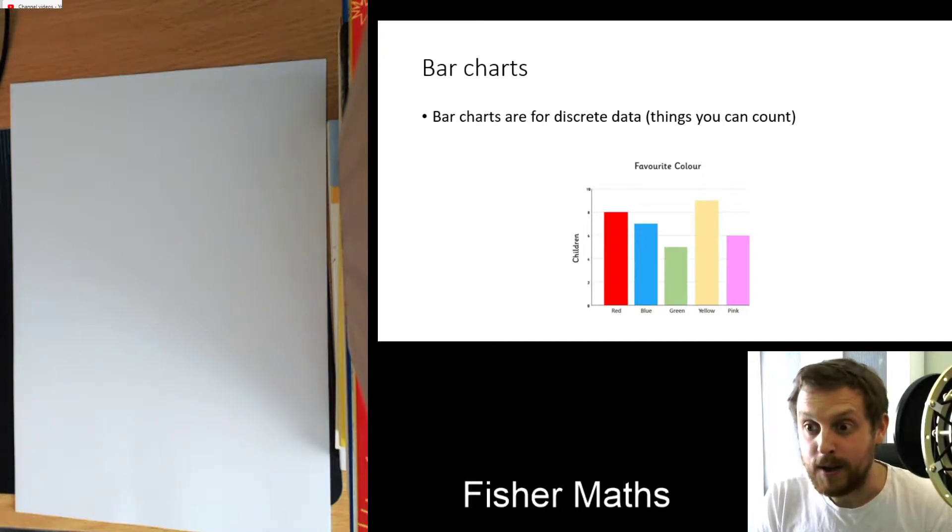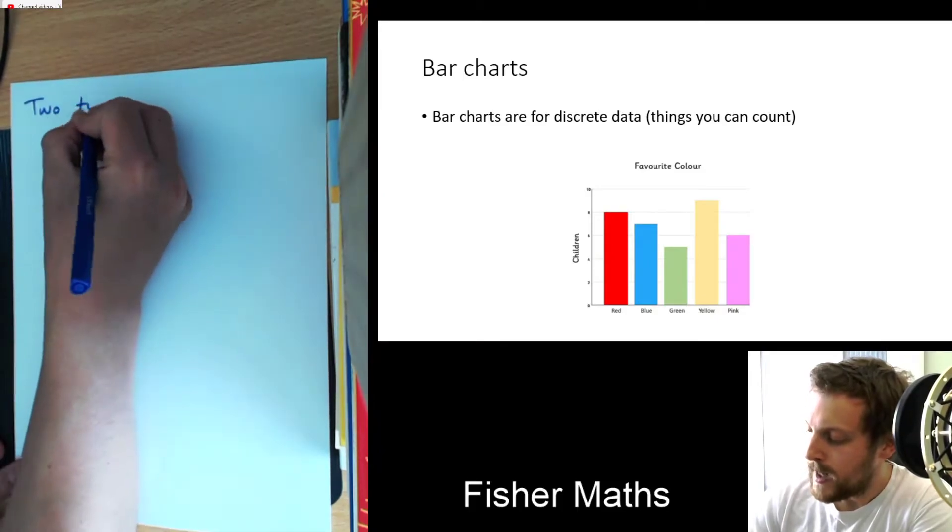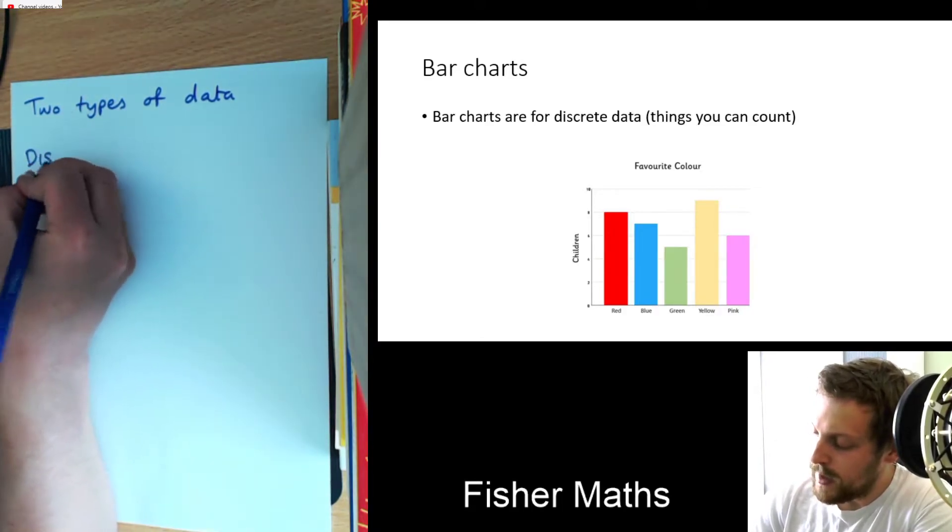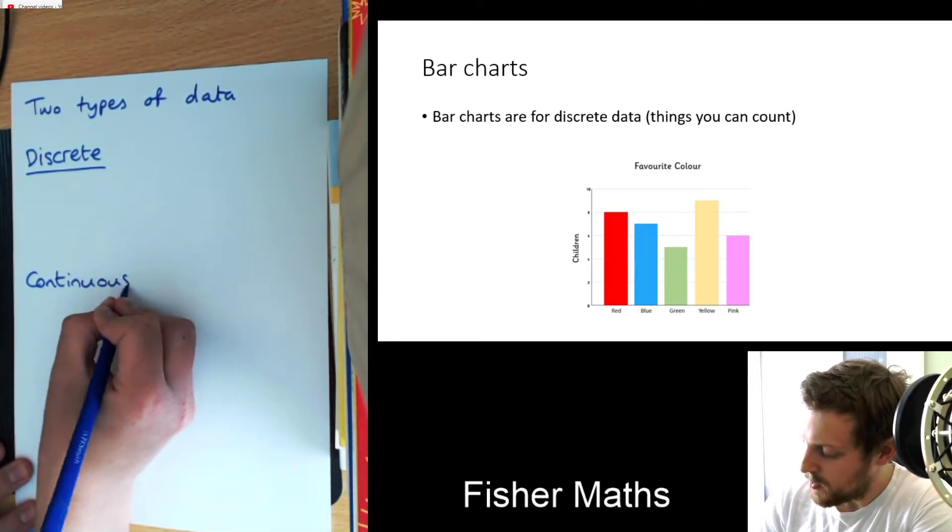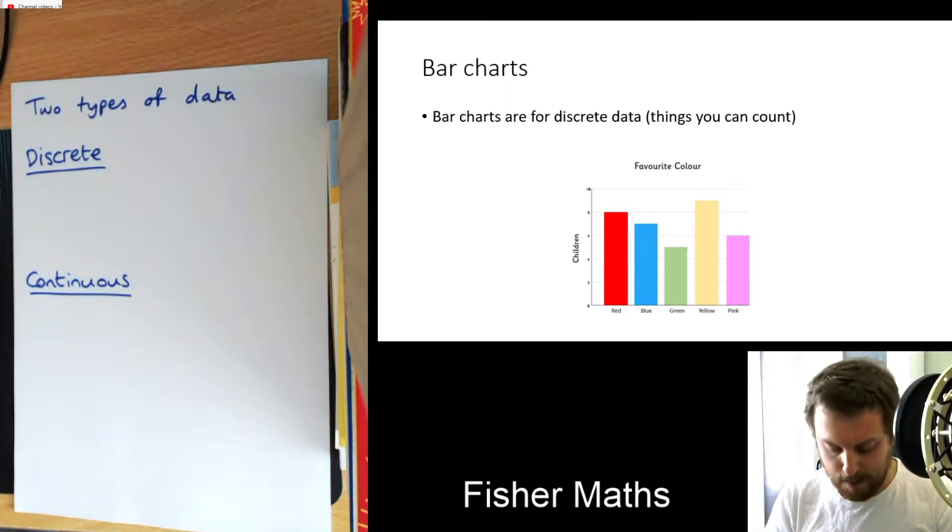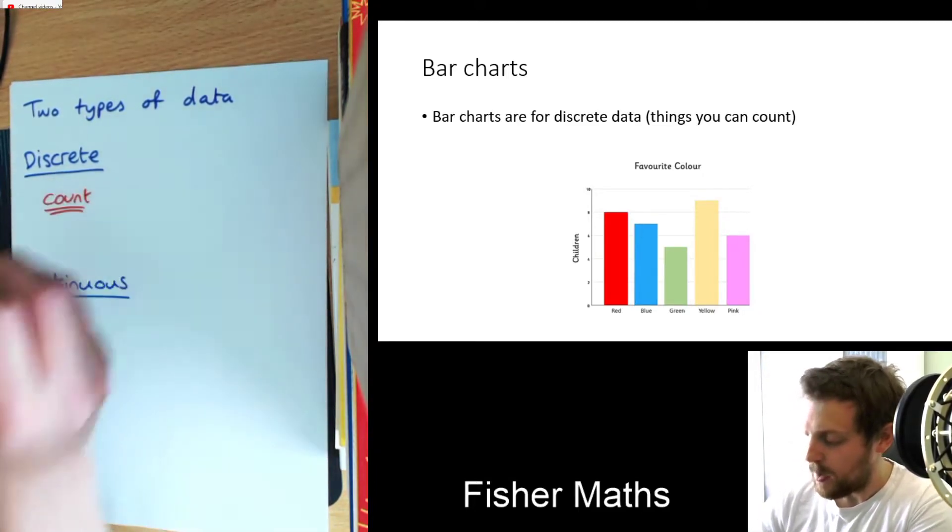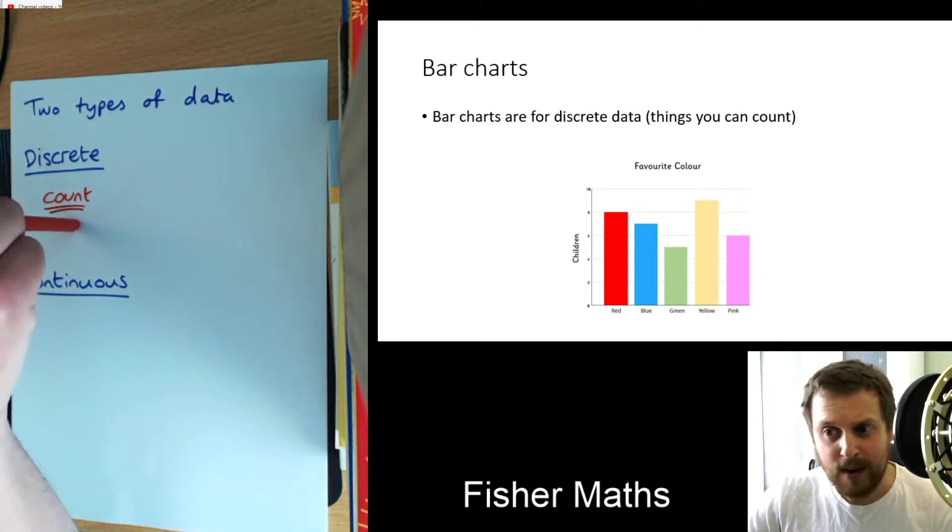So the first thing to talk about is bar charts. So it's at this point I'll just quickly do a reminder on the difference between the two different types of data. There are two types of data: discrete and continuous. The difference between them is discrete data is things that you count. It doesn't really require any specialist equipment, unless of course you're counting hundreds of thousands of things, in which case you might get a little bit tired doing it yourself.